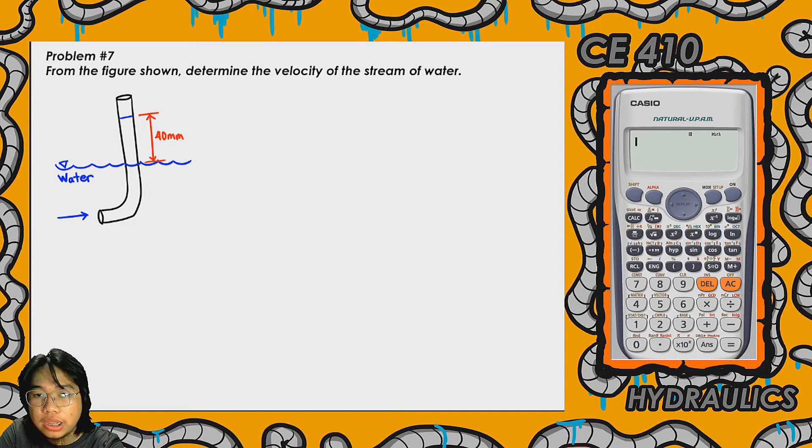As you can see, the primary fluid that is flowing in the stream is water. Since the stream is exposed to the atmosphere on the upper part of the liquid, this is open - it's not in a closed pipe - this is in an open channel.